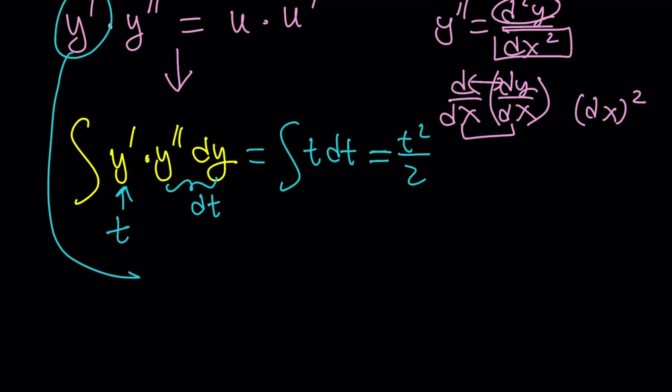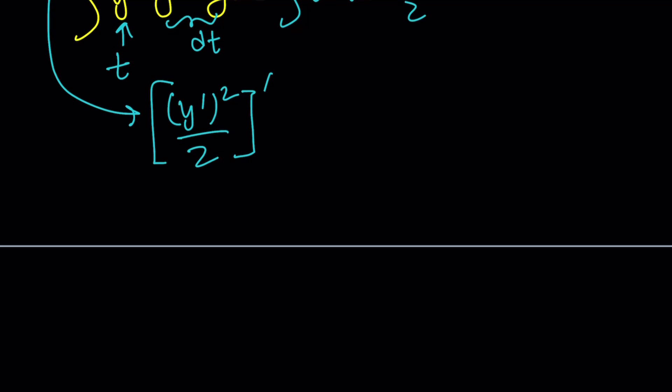Now, t squared divided by 2. So what is t? t is this one. In other words, this is the derivative of y prime squared divided by 2. Make sense? It's the derivative of this. How do you differentiate y prime squared? Well, first of all, you have to take care of the power. You reduce the power. And then multiply by the derivative of the inside from chain rule, which is y double prime. And divided by 2. Ta-da! We get the same expression. You see? How that works.